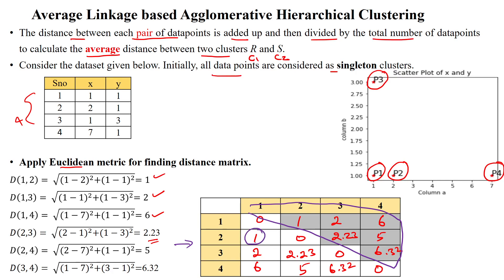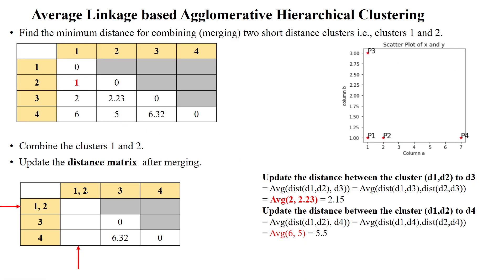The minimum value is 1. The closest pair of data points are 1 and 2. We combine data points 1 and 2 into a single cluster. After combining, P1 and P2 form one cluster, while P3 and P4 remain as two separate individual clusters.